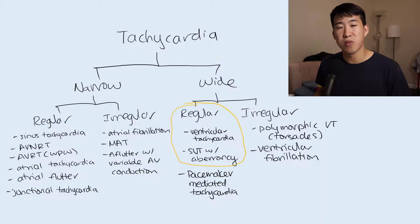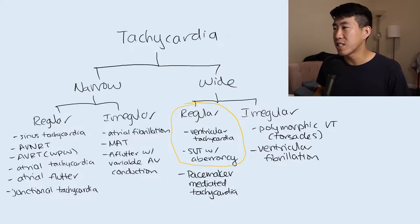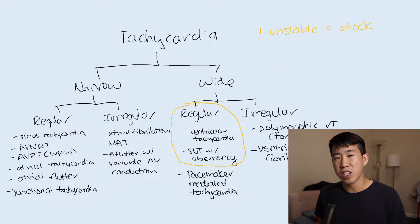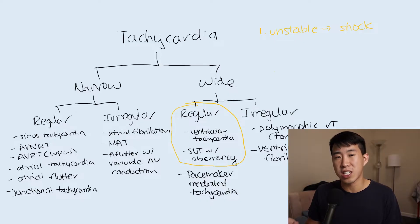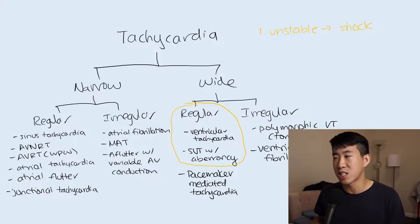Before evaluating whether this is SVT or VT, a couple of disclaimers. In basically any of these abnormal rhythms, if the patient is unstable, you just want to shock them — you don't have time to figure out the exact rhythm. Also, if you're ever not sure, assume it's VT, because VT is much more common than SVT with aberrancy — at least 80 to 90 percent of cases are VT. Mistreating ventricular tachycardia is much more dangerous than potentially mistreating SVT with aberrancy, so it's always safer to assume VT.